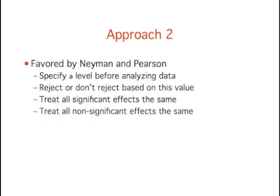The alternative approach, favored by the statisticians Neyman and Pearson, is to specify an alpha level before analyzing the data. If the data analysis results in a probability value below the alpha level, then the null hypothesis is rejected. If it is not, then the null hypothesis is not rejected.